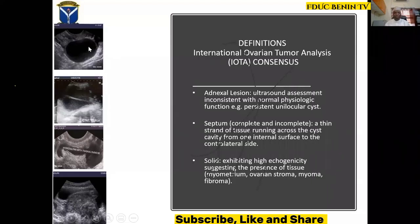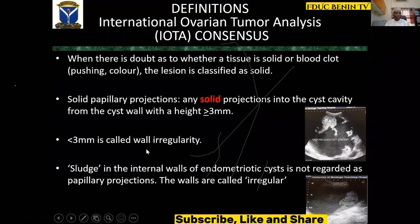Occasionally the corpus luteum may appear as a solid structure; this should not be confused with a lesion because it is normal physiology. A septum is a thin strand of tissue that runs from one end of the cyst wall to the other — it can be complete, as seen in endometrioma, or incomplete, as in hydrosalpinx. A solid tissue is a tissue that exhibits high echogenicity suggestive of the presence of tissue such as myometrium, fibroid, or ovarian stroma. When there is doubt as to whether a lesion is solid or blood clot, classify it as solid — that is the IOTA consensus: take the worst-case scenario.